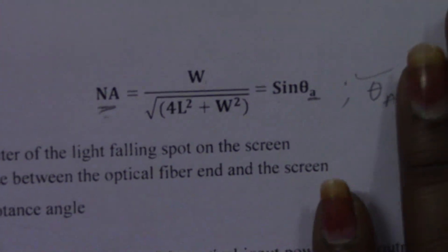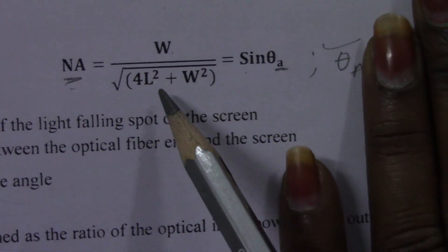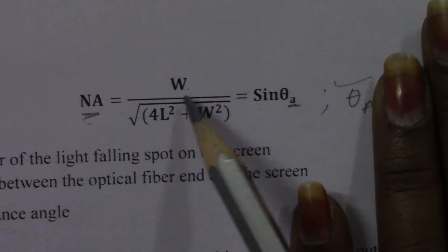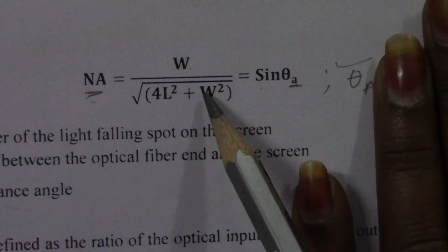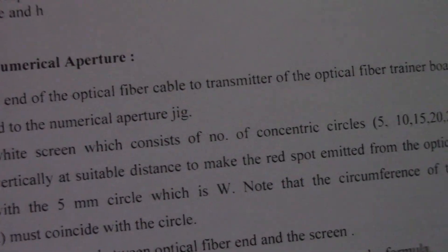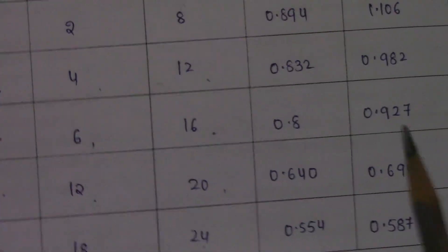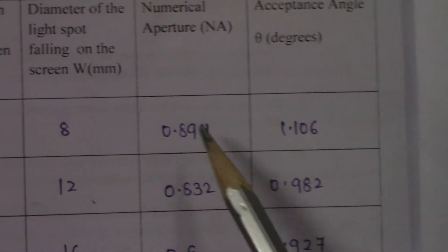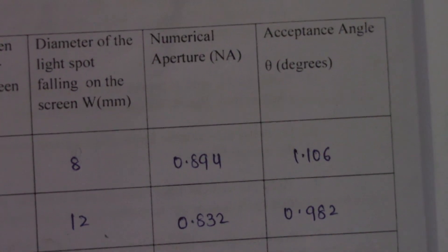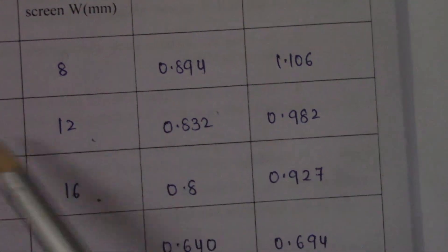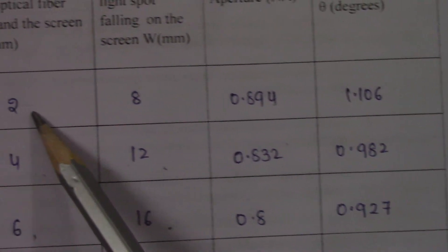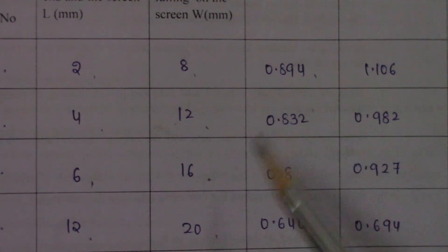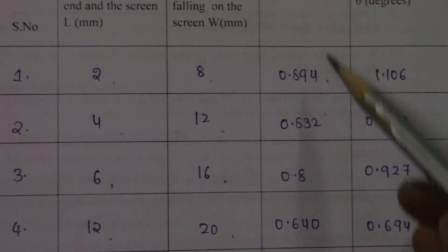The formula is NA = W / √(4L² + W²). After substituting all those readings — I have already done the calculations — for each and every value of L and W, I measured NA.